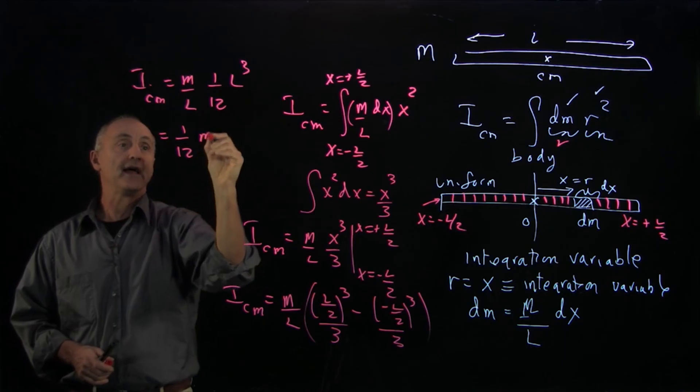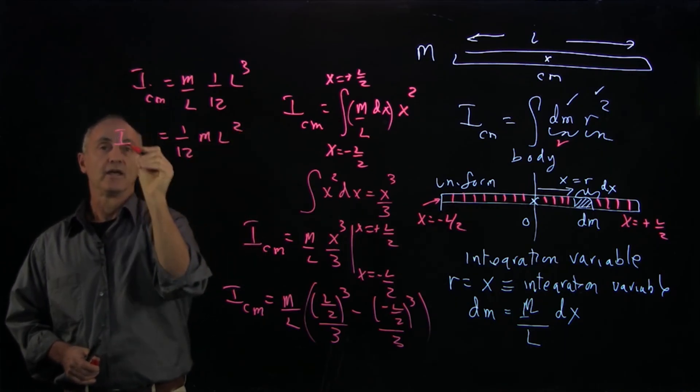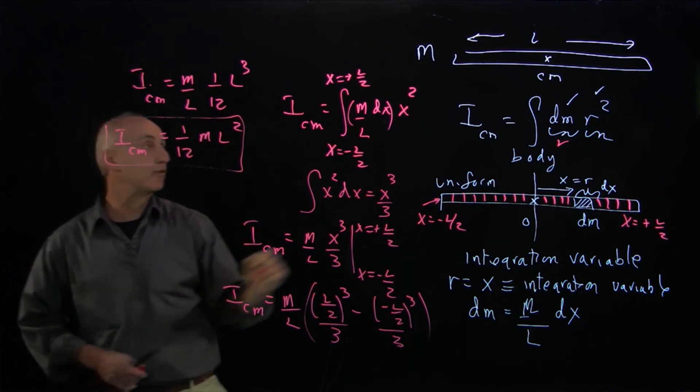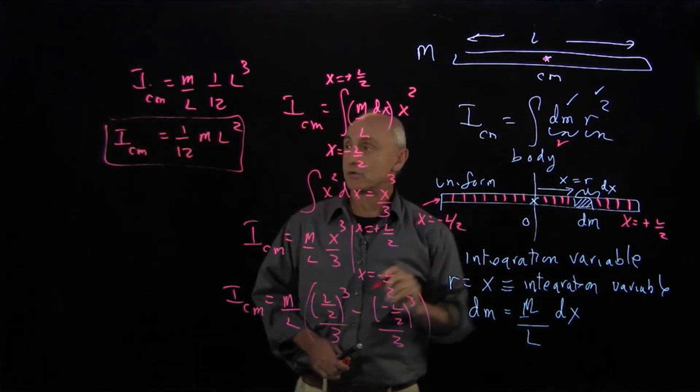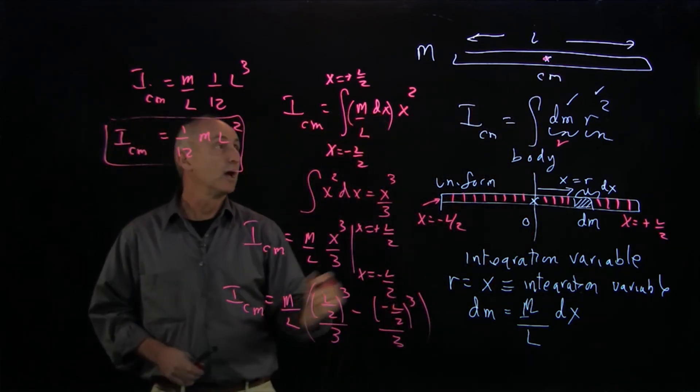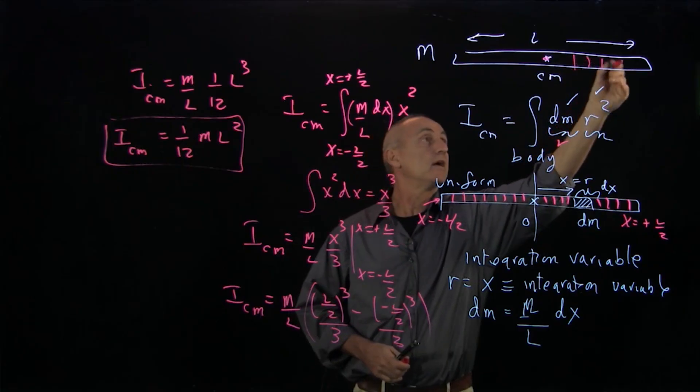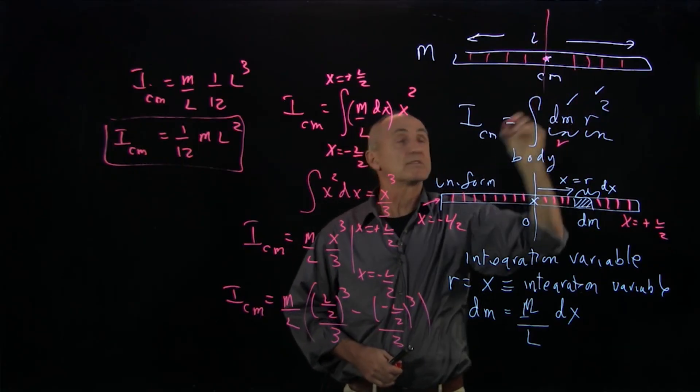Or 1/12 ml squared is the moment of inertia about the center of mass of our rigid rod. This is a measure of how the mass is distributed about this axis.